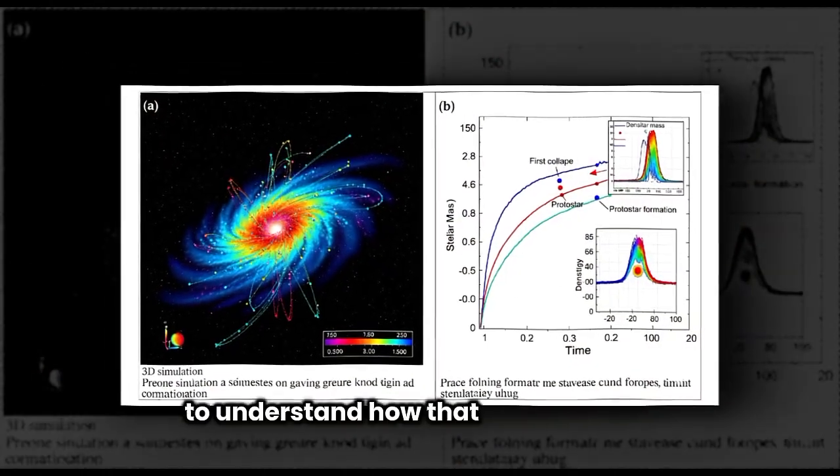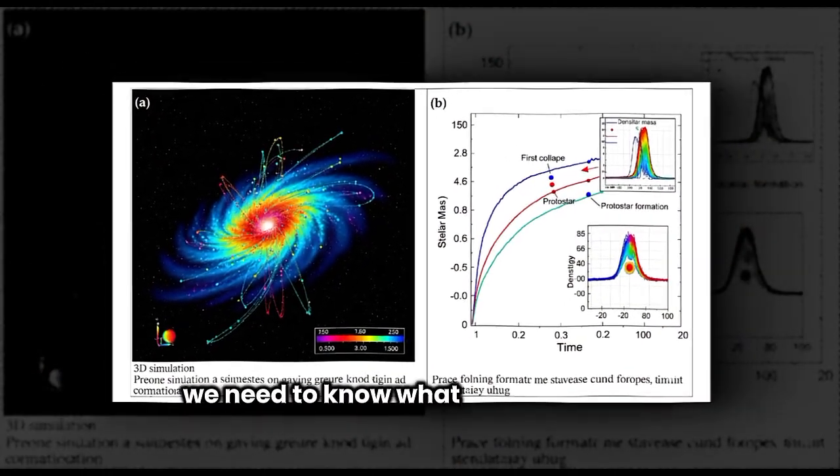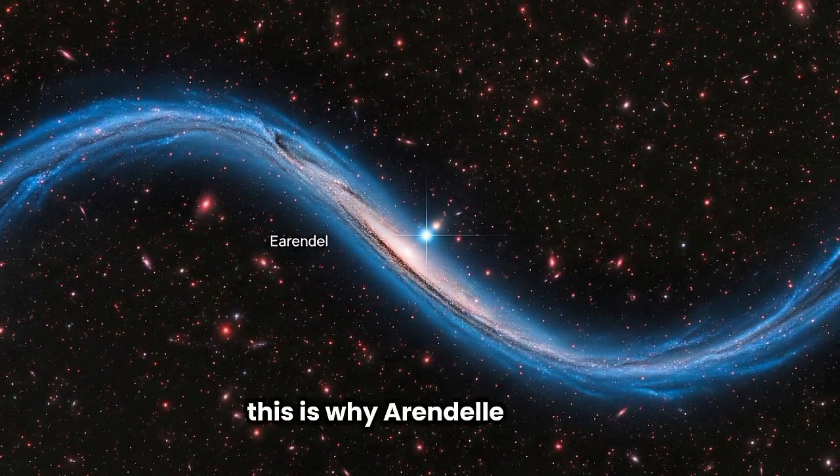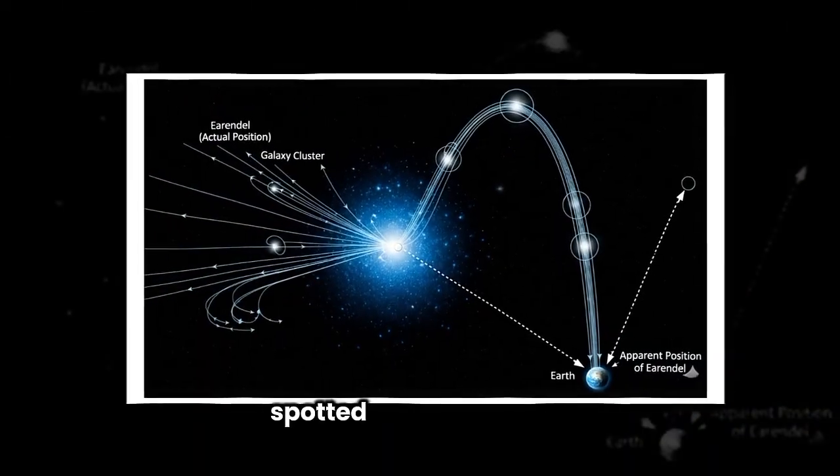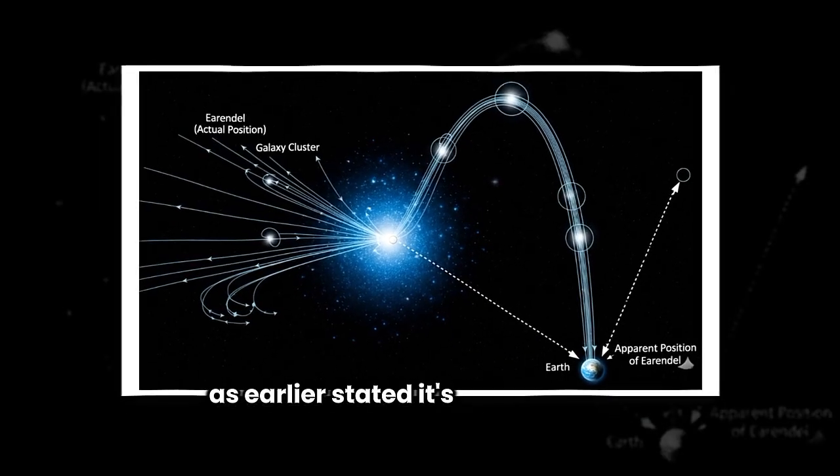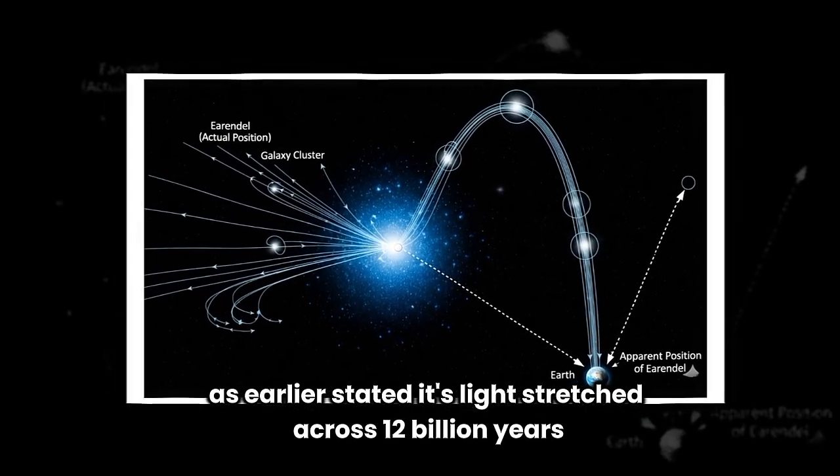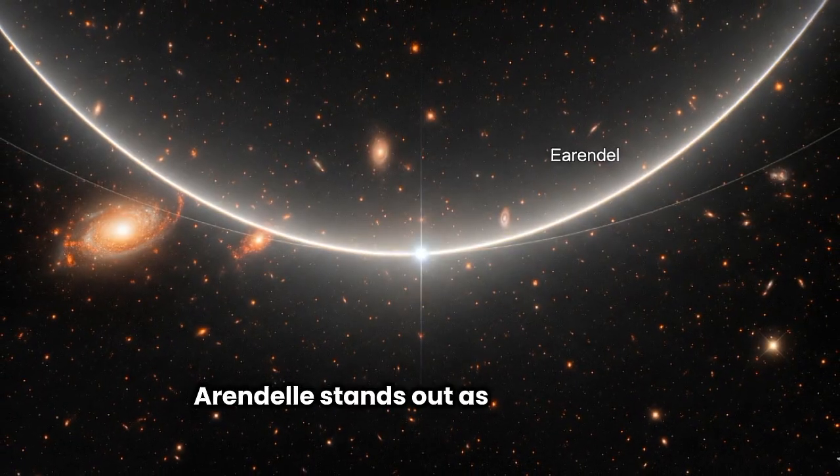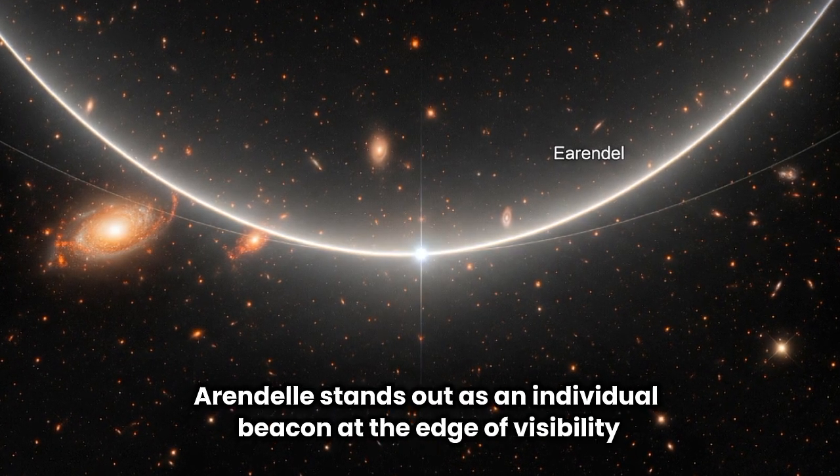To understand how that dawn unfolded, we need to know what those primordial stars were really like. This is why Earendel matters. Spotted in the sunrise arc, as earlier stated, its light stretched across 12 billion years and then magnified by a cosmic lens, Earendel stands out as an individual beacon at the edge of visibility.